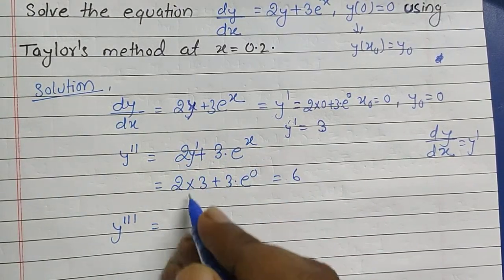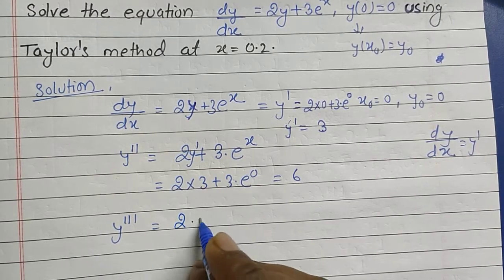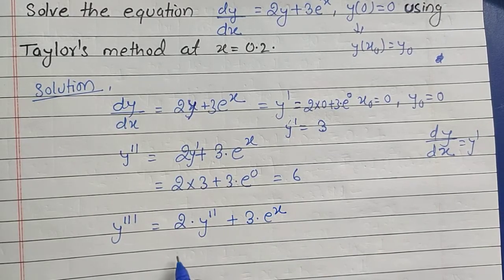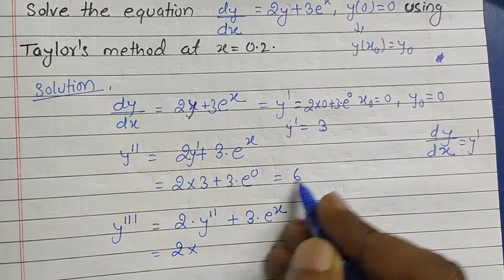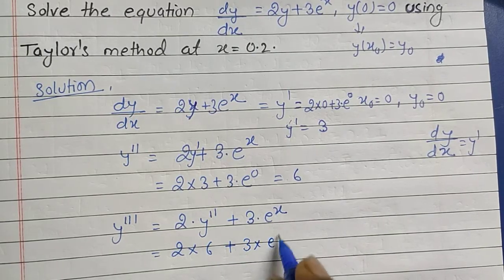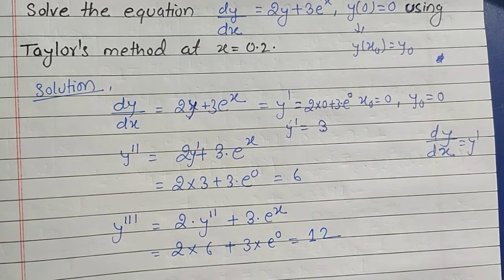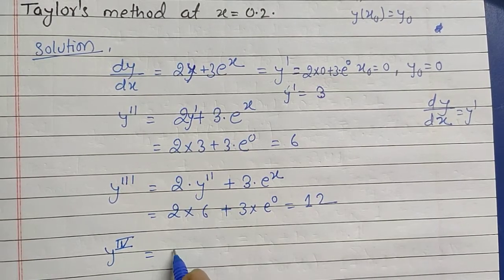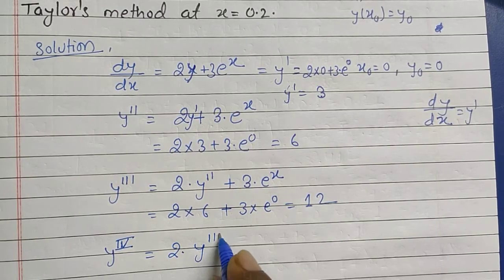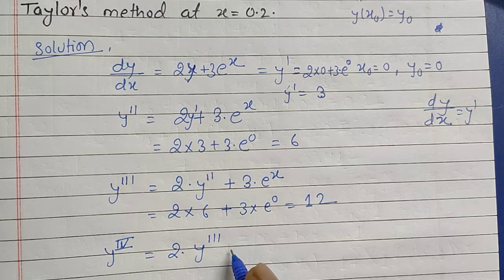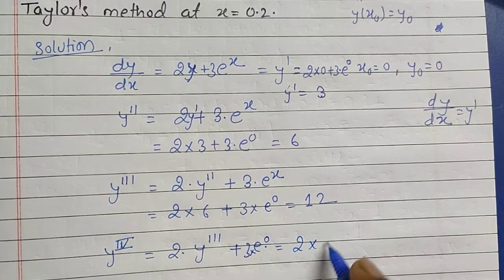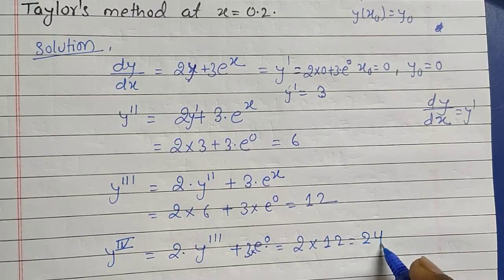So y''' = 2(y'') + 3e^x. And y'''' (the fourth derivative) is again 2(y''') + 3e^0. Using y'' = 6: y''' = 2(6) + 3e^0 = 12 + 3 = 15, and y'''' = 2(15) + 3 = 33. Note: these values are corrected in the next step.